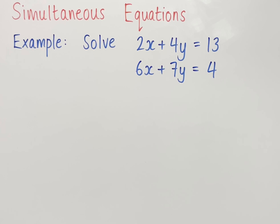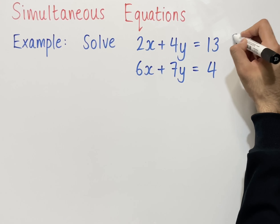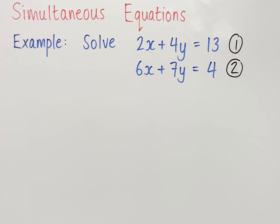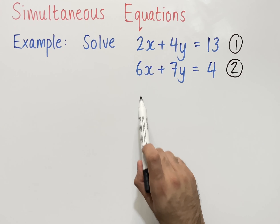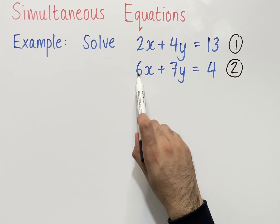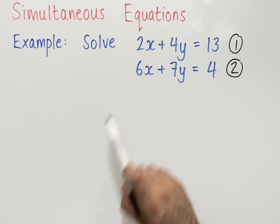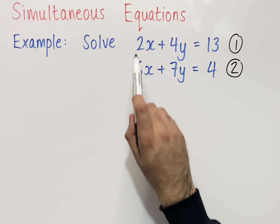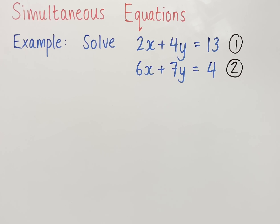The first step is to label both equations — equation 1 and equation 2. Then we look at one of the unknowns and cancel it. Looking at the x's, we've got 2x in the first equation and 6x in the second. We need to find the lowest common multiple — the smallest number divisible by both 2 and 6 — which is 6.